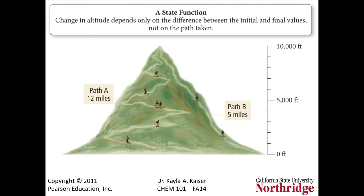A quantity is called a state function when it is path independent. In this image, hikers could take path A, which is longer — 12 miles with many switchbacks — or path B, which is shorter, only 5 miles, but has a steep incline. Regardless of their path, hikers will arrive at the pinnacle whether they take path A or B. Hence, altitude is a state function while distance is not.